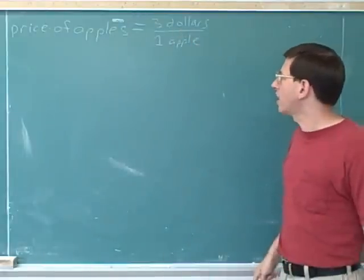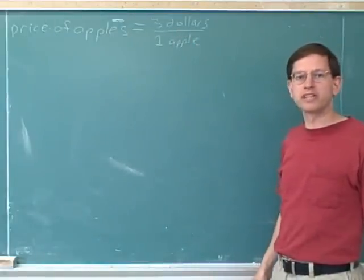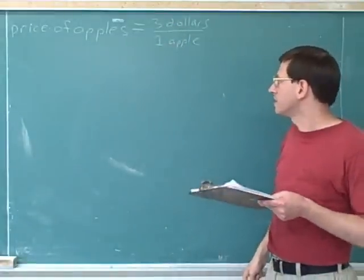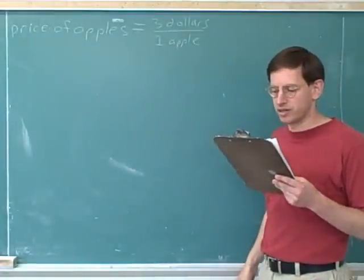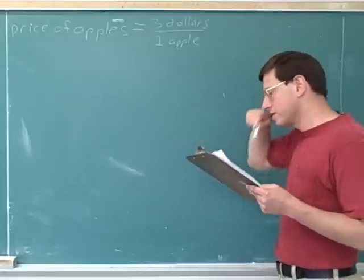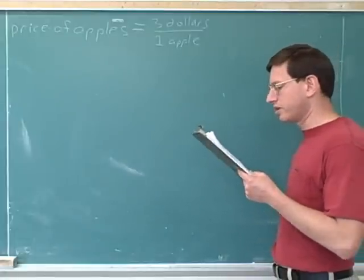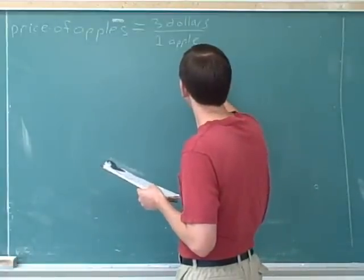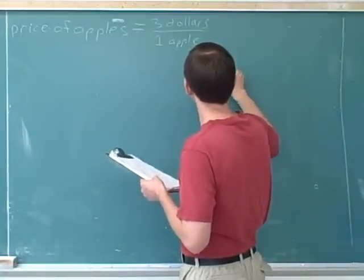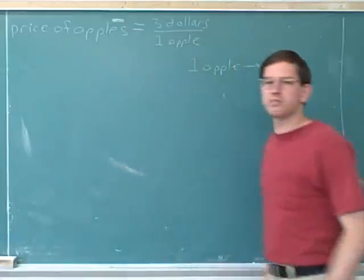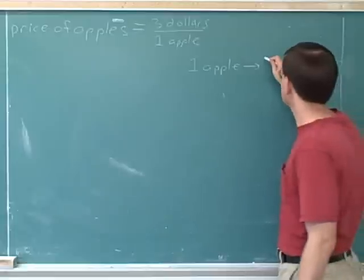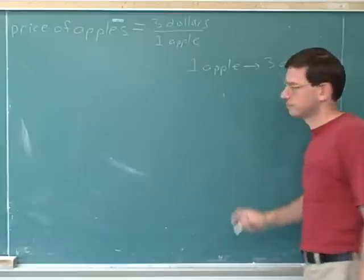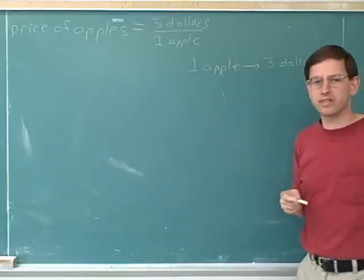Let's go back to the apples that cost three dollars per apple. We've already seen that if you buy one apple, the total amount you will spend would be three dollars on those apples. Let's set that out more clearly. Let's say that you buy one apple — how much will you spend on those apples? Three dollars. That's the information that the price gives us.